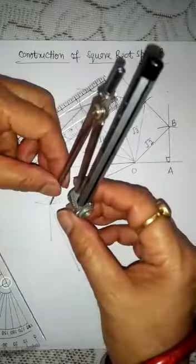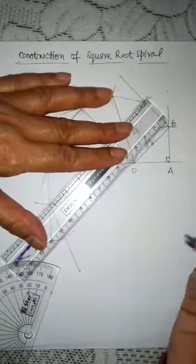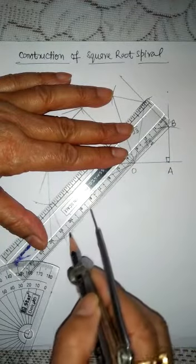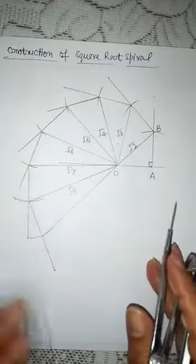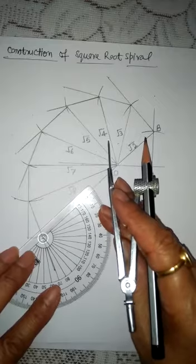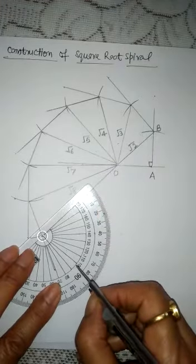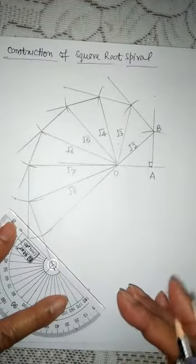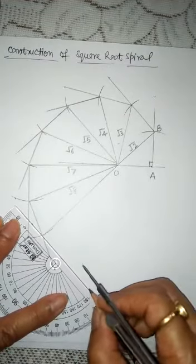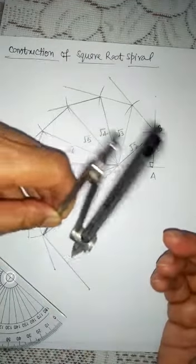Again cut and join. Then again make 90 degree. We have to do it till we get under root 17. Now cut 1 inch and join it.